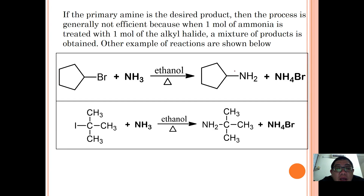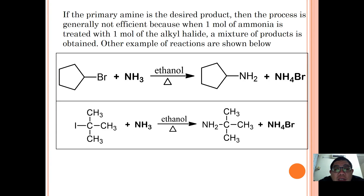For example, bromocyclopentane reacted with ammonia gives a mono-substitution product — cyclopentylamine — and HBr. This is generally how the alkylation reaction of amines takes place. This concludes the second reaction involving haloalkanes.